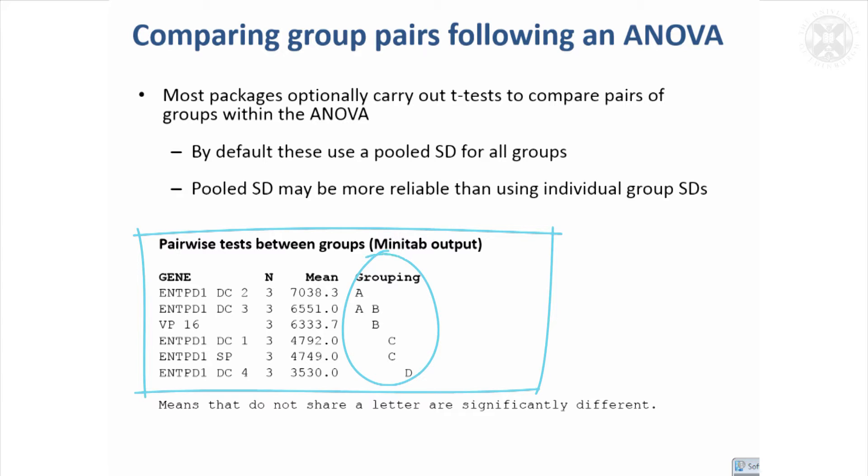Minitab has this quite neat way of saying which groups are statistically significantly different from each other by giving them each a letter. It says if the two groups do not share a letter, then they're statistically significantly different. So if we compare the first two groups, the first group's got letter A, the second gene has got A and B, so they share the letter A, so they're not different from each other. But when we compare the first group to the third group, they don't share a letter—there's an A and a B—so the first group and the third group are significantly different from each other. You can see from this simple display which groups are significantly different from each other, but other packages will express this in a different way.